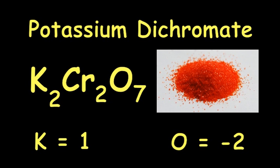In potassium dichromate, potassium is plus one and oxygen is minus two. Find chromium's valence.